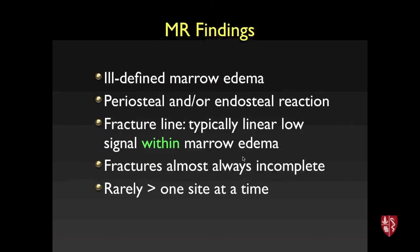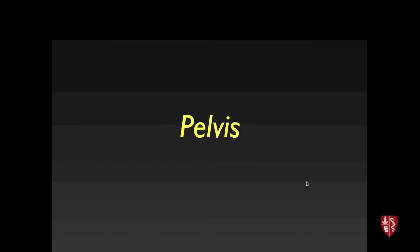MRI will show marrow edema. You may see edema along the periosteal or endosteal surface, and fracture lines, if present, are typically a linear low signal within the area of marrow edema. These fractures are almost always incomplete, and it's uncommon to have more than one site of stress injury at a time.